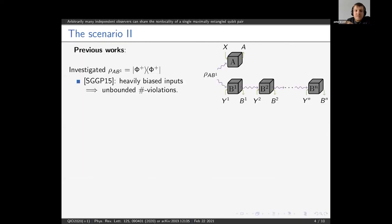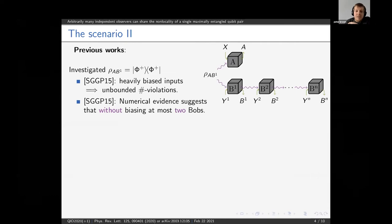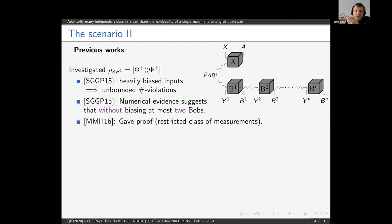This question has been analyzed previously for the maximally entangled state for two qubits — for example |00⟩ + |11⟩. In the initial work that introduced this scenario, the authors showed that if you allow the Bobs to very heavily bias their input distribution, then there's no bound on the number of Bobs that can achieve a CHSH violation with Alice. However, they also mentioned numerical evidence suggesting that without this heavy biasing, at most two Bobs could violate the CHSH inequality. About a year later, a work gave a proof of this bound of two Bobs, but only under a restricted class of qubit measurements.